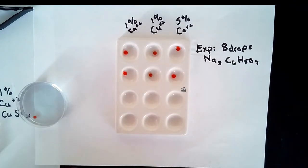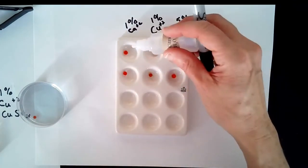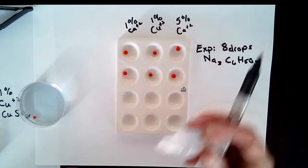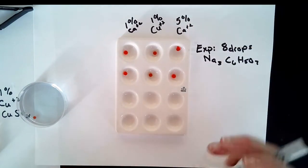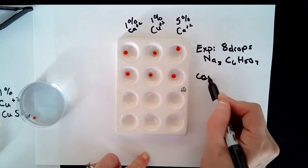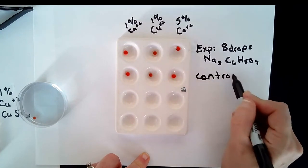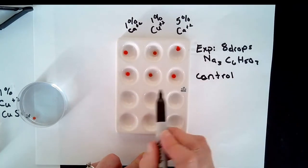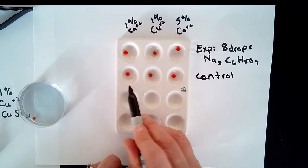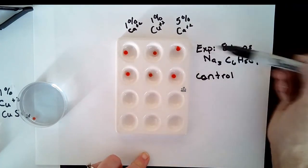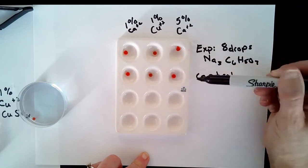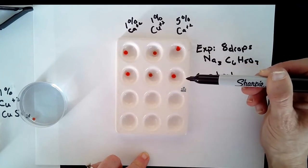Then after you add your eight drops to each of these wells, you will note your observations and then make sure you also have a control solution that you are dropping onto these so you can compare your experimental with the sodium citrate to the control that doesn't have sodium citrate.